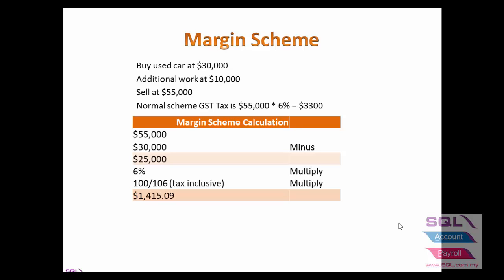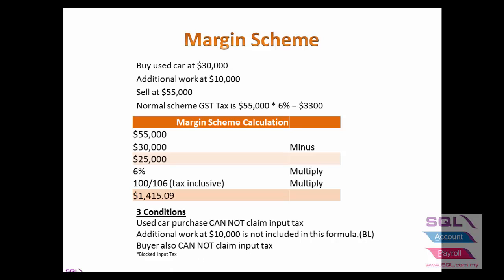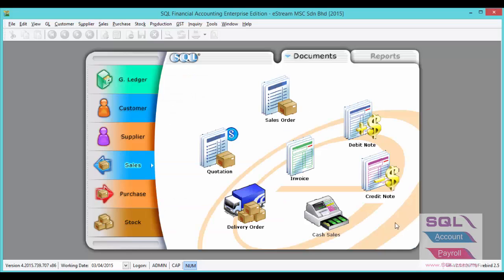For this example, the tax amount will be $1,415.09. There are 3 conditions to note: first, the used car purchase cannot claim input tax; second, the additional repair work of $10,000 is not included in this formula; and third, the buyer also cannot claim input tax.